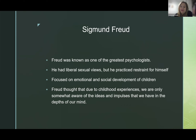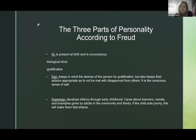More about Sigmund Freud: he was known as one of the world's greatest psychologists. He used liberal sexual views but practiced restraint personally. He focused on social and emotional development of children. Freud thought that due to child experiences, we are only somewhat aware of the ideas and impulses we actually possess in the depths of our minds — he felt we are not always aware of our internal tendencies. There are three parts of personality according to Freud. The id was present at birth and is an unconscious part — it's said to be a biological drive for gratification.